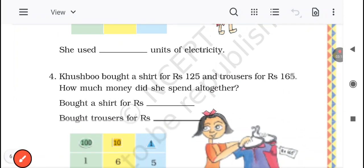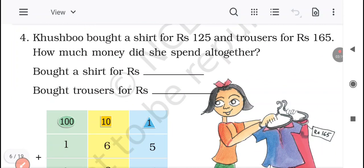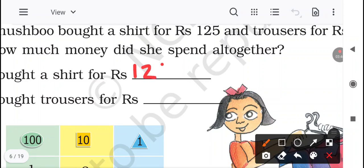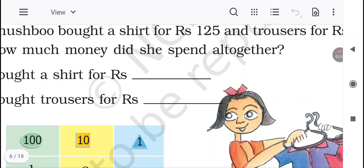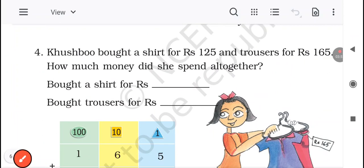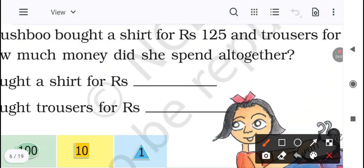Now question 4. Khusbu bought a shirt for Rs. 125 and trousers for Rs. 165. How much money did she spend altogether? So Khusbu ne kya buy kiya? She bought a shirt for Rs. 125. So bought a shirt for Rs. 125. Here is the information blank, here we will write it down. So Rs. 125. What is the cost of the trousers? Rs. 165. So we will write here 165. And shirt is 125.